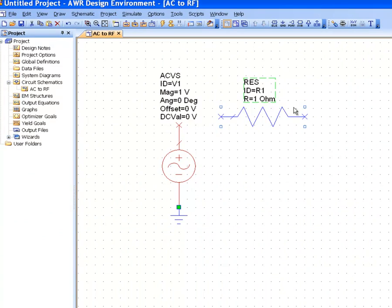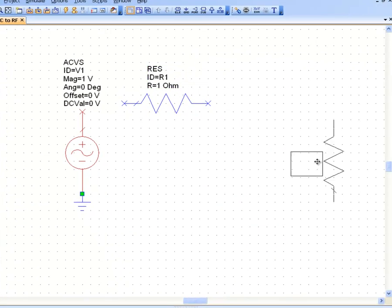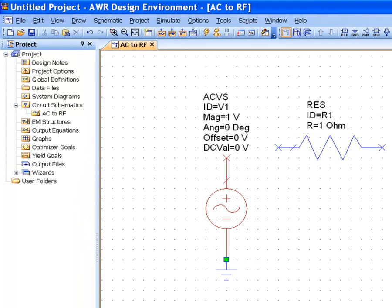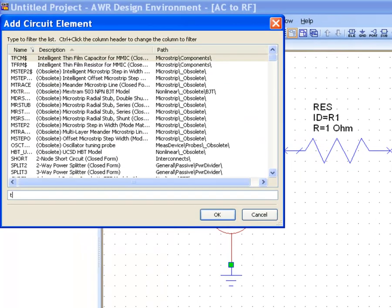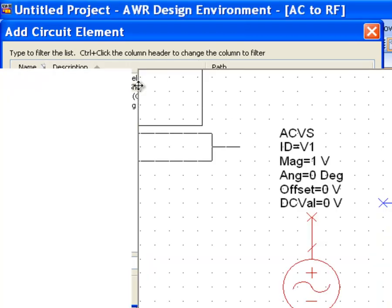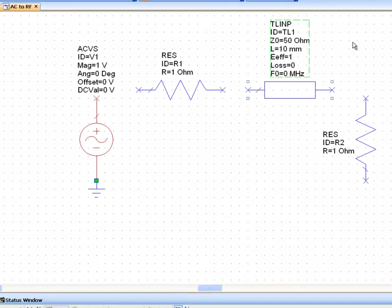Place one there and one there, and then we will get ourselves a transmission line in a physical form TlinP and place it on the schematic. We can change the name of our elements to make it clearer what they represent, so we can call this RS and we can call this RL, and then we connect everything together.